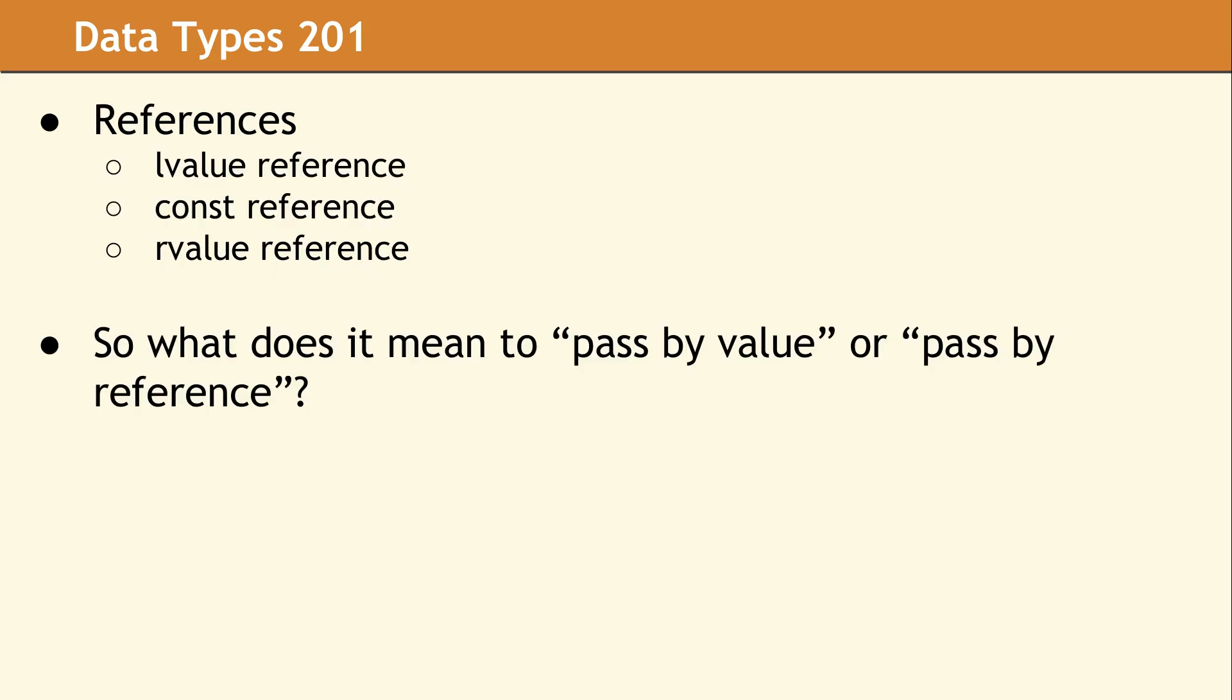So now we're going to talk about references. There are three types: L value reference, const reference, and R value reference. We're very particular about saying the word reference every time we're talking about a reference so that we don't get confused between an L value reference and an L value category, which are nothing alike and not similar at all. It's very important to be precise in your terminology. So when we speak about these, we will always say L value reference when we mean the reference data type and L value when we mean the value category.